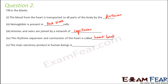Main excretory product in human beings — which is the most important nitrogenous waste? It is urea. In case of aquatic animals like fishes, it is mostly ammonia, and in case of amphibians like reptiles or lizards, birds, and insects, it is uric acid.